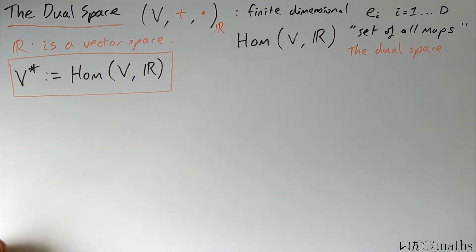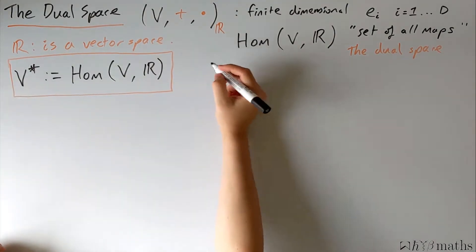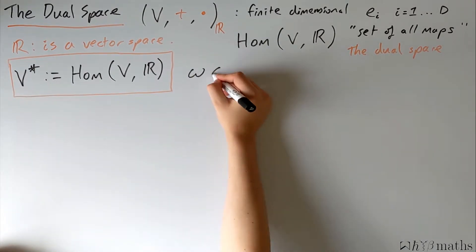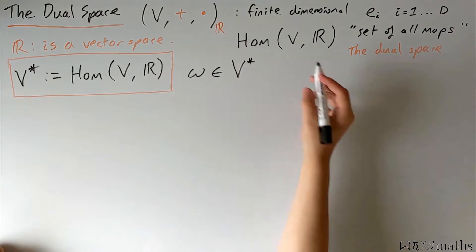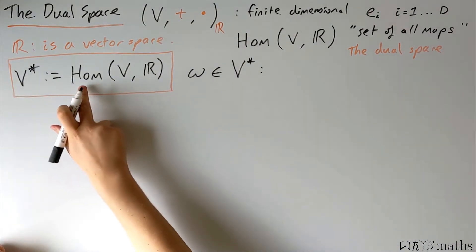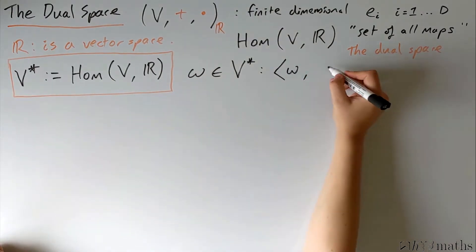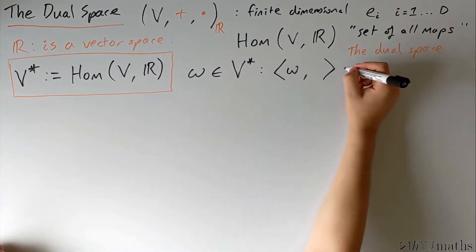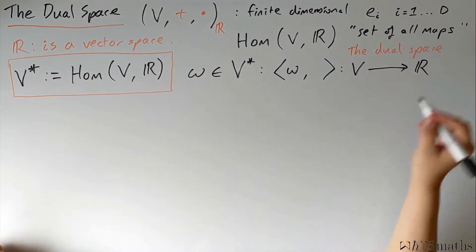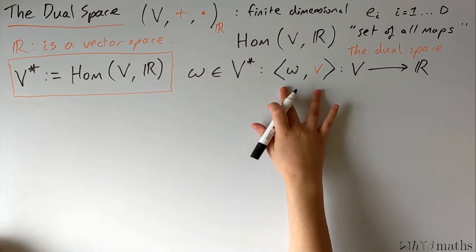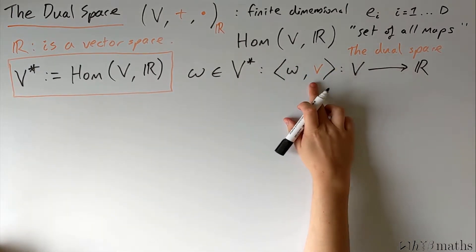Let's pull apart what this means. I'm going to denote elements of the dual space using Greek letters. So if we have some omega, which is a dual vector — simply an element of the dual space — we know that it should be a map, because it comes from the set of all possible maps. So omega is a map which takes a vector from V and takes us into the real numbers. The map itself is the dual vector object, and we notate how it acts on a vector using bracket notation.